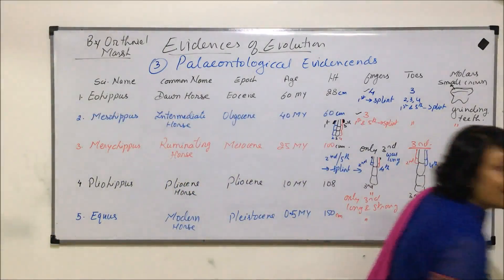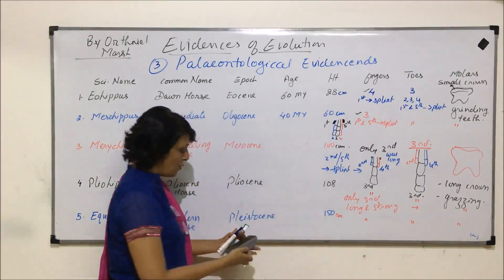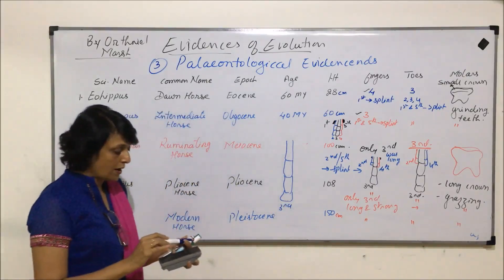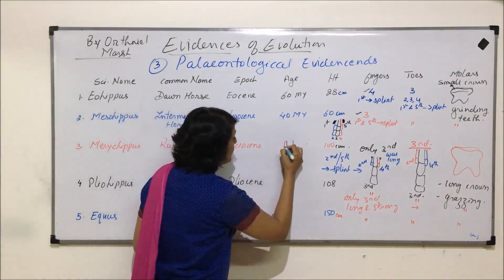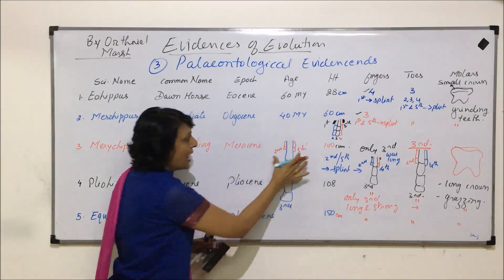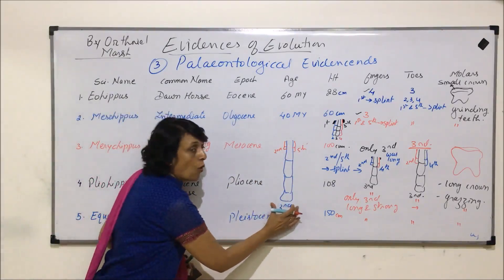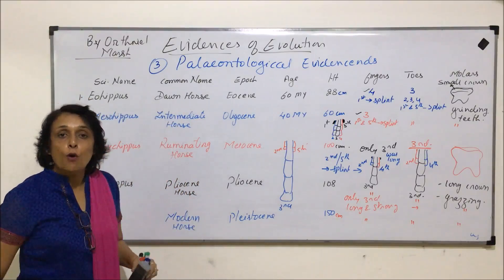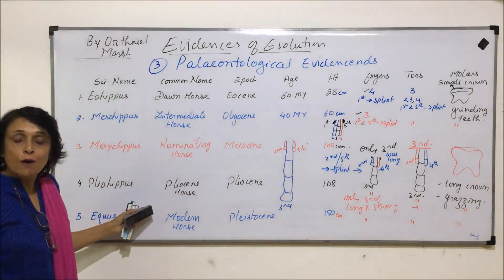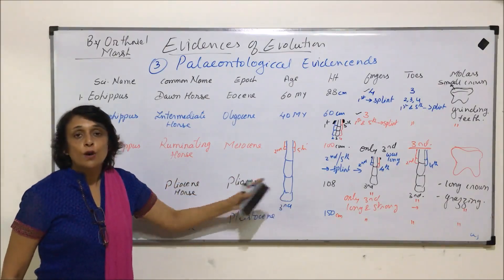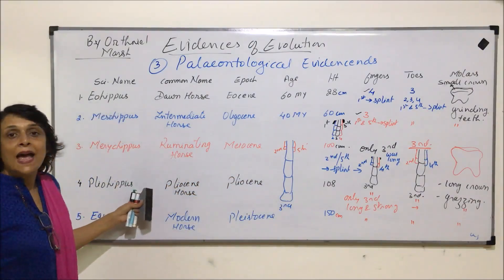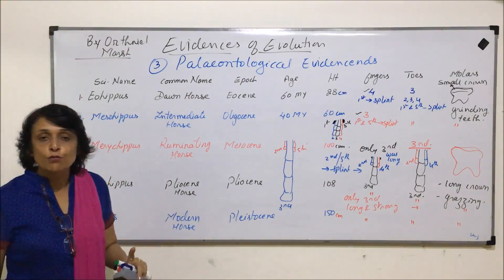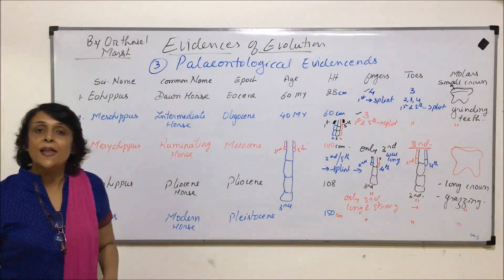Looking at the fore and hind legs of the modern horse, we find only the third digit, which has become exceptionally long. The second and fifth are highly reduced — these are the splint bones. Only the third digit in the forelimbs and hind limbs is functional. Since all these fossils were found in complete shape, we are able to trace the lineage of horses. Similar fossil studies have been done for elephants and camels, contributing to paleontological evidence for evolution.